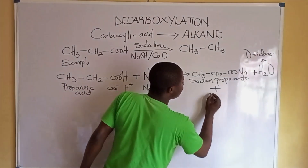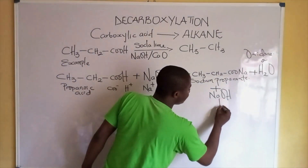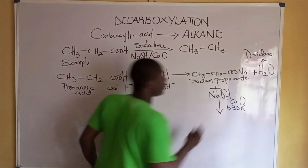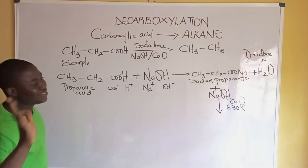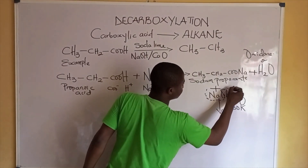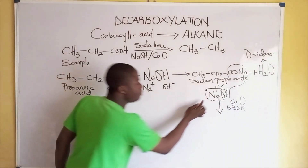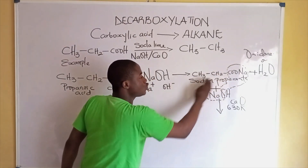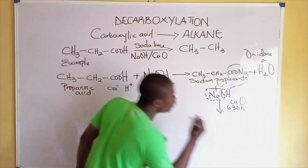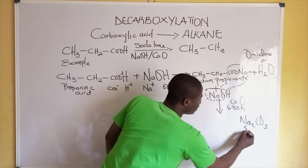The sodium hydroxide, also called caustic soda, also reacts with the sodium propanoate in the presence of calcium oxide at a temperature of about 300°C. We remove sodium oxide, and the remaining part of the sodium propanoate — COONa — gives us Na₂CO₃, which is called soda ash.